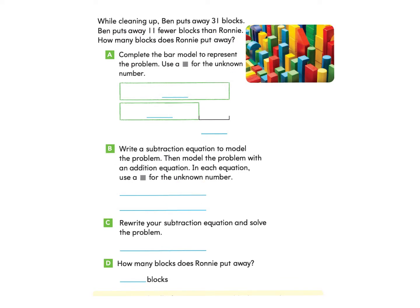Nice work. Let's take a look at the next page, page 351. Problem 11: While cleaning up, Ben puts away 31 blocks. Ben puts away 11 fewer blocks than Ronnie. How many blocks does Ronnie put away? For Part A, complete the bar model to represent the problem using a square for the unknown number. We know Ben puts away 31 blocks and 11 fewer than Ronnie, so we write 11 here. The unknown is the amount Ronnie put away, so we draw a square for that.